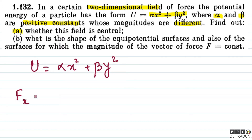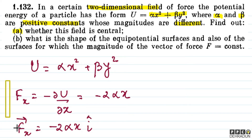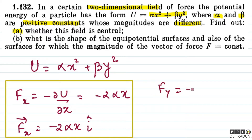We can find Fx, which equals minus del u upon del x. Taking the partial derivative with respect to x, we get Fx vector = −2αx î. Similarly, Fy = minus del u by del y, which gives us −2βy.